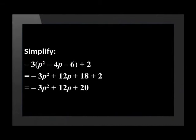We add the like terms and get an answer of negative 3p squared plus 12p plus 20. Let us wrap up with one last example.